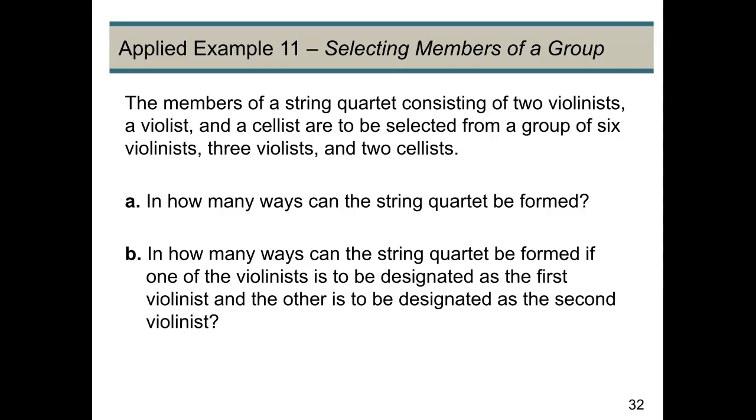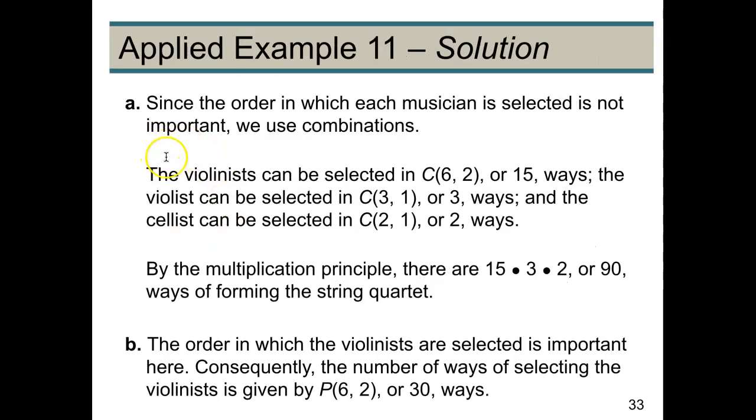So first off, we want to look at the number of ways the violinists can be selected. We're going to choose two from the six possible violinists, so that's 15 ways. We have three violists, we need to choose one, that can be done in three ways. And we have two cellists, we need to choose one, that can be done in two ways. We need to use all this in combination with the multiplication principle, and so we will have 15 times 3 times 2, or there are 90 ways a string quartet can be formed.